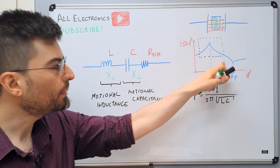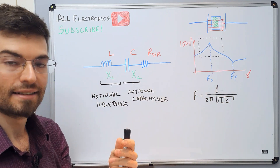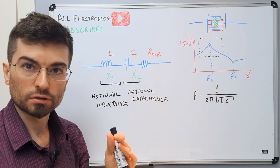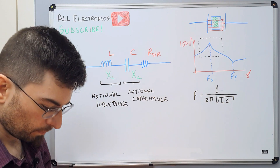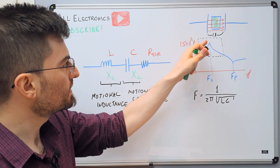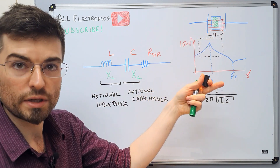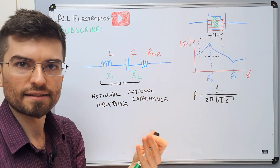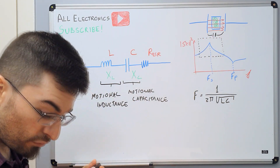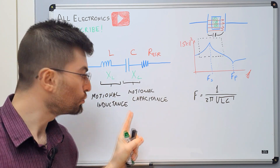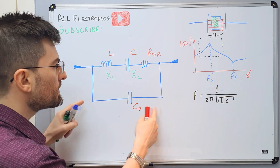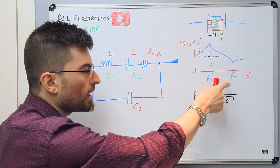But we have something missing — we have the parallel resonance point. The symbol of the crystal gives us intuition: the crystal really is a piece of quartz with two electrodes, and those electrodes have capacitance because they are very near each other. The quartz crystal acts as a dielectric of a capacitor. So we have a capacitance C0 across the terminals also. Adding this capacitance to the model, we generate a parallel resonance as well.